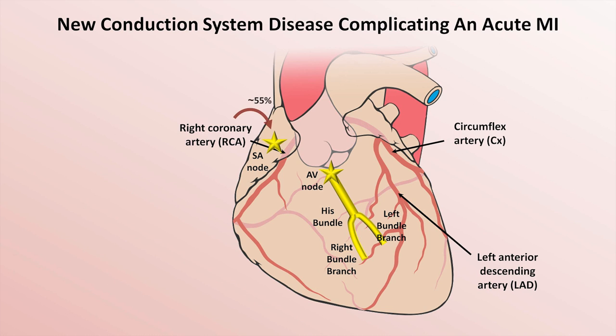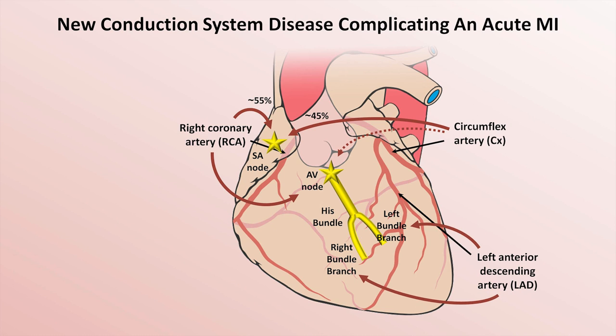In about 55% of people, the RCA supplies the SA node, and it's supplied by the circumflex in about 45%. The RCA usually supplies the AV node, but it can be supplied by the circumflex in a minority of people. The left and right bundle branches are supplied by the LAD, and the bundle of HIS likely has a dual supply from the RCA and the LAD.